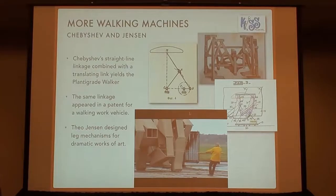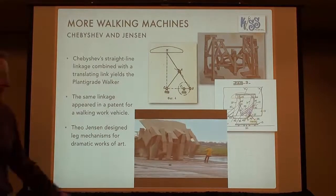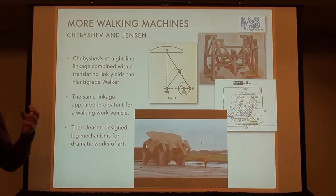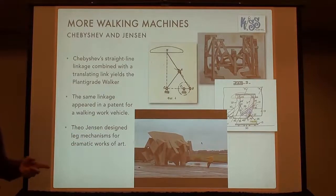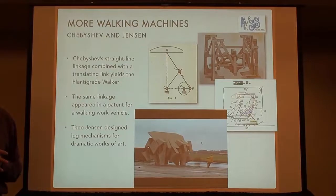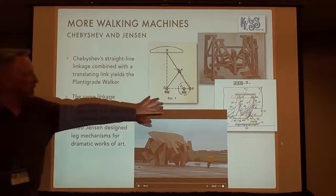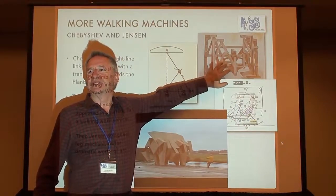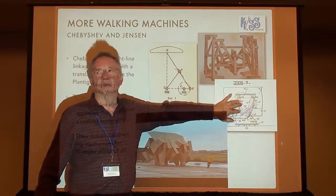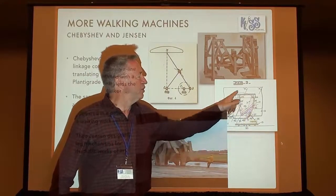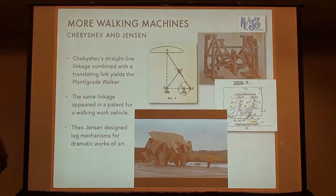This is Theo Jensen, an artist in the Netherlands, and this is one of his walking machines — the rhinoceros version of his strand beast. Over here is a US patent that basically took Chebyshev's work and patented it about 50 years later as a 'walking work vehicle.' You can see the coupler curve and the lambda mechanism, with two of them creating a translating piece.